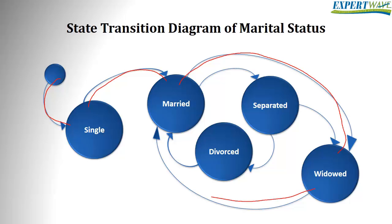In this case, one test case covering all transitions could follow the sequence: single, married, widowed, married, separated, divorced, married, separated, widowed. As for valid and invalid sequences — in our example, if you are married, you cannot be single again. Single is not a valid state after being married.